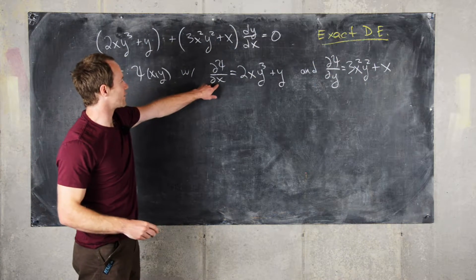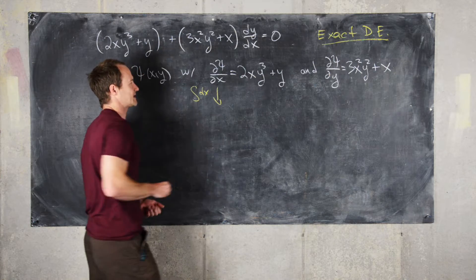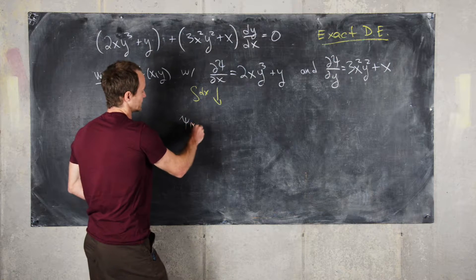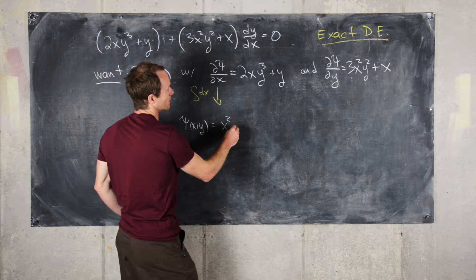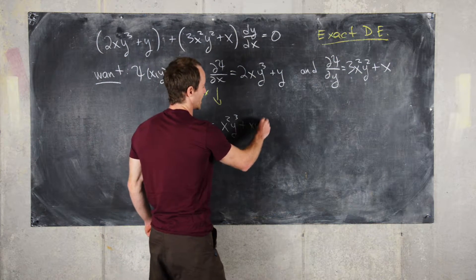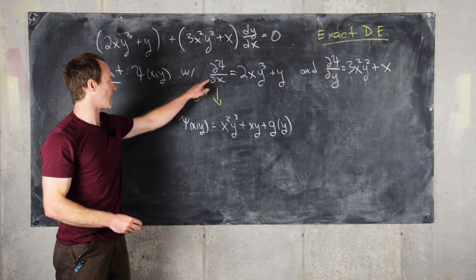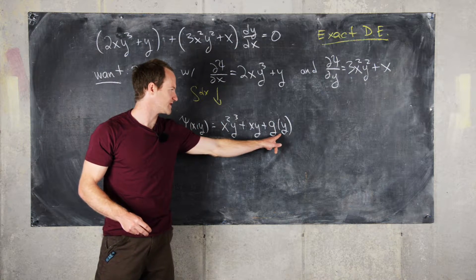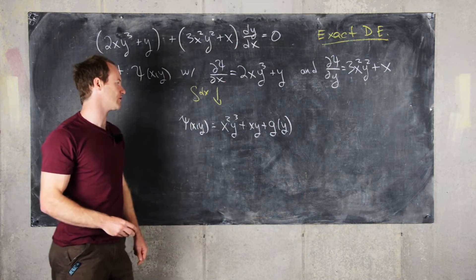We take the antiderivative of a with respect to x. That gives us psi(x, y) equals x²y³ plus xy plus g(y), where g(y) is some pure function of y. With respect to x, g(y) is treated as a constant, so it doesn't appear in the partial derivative with respect to x.